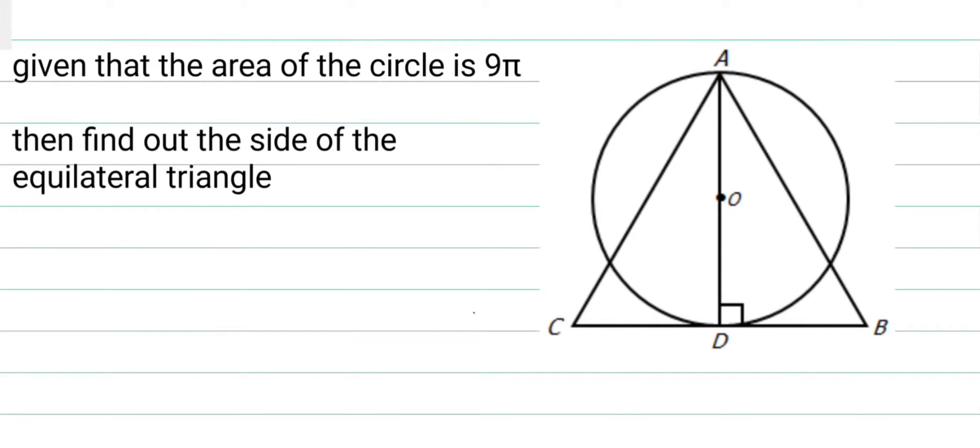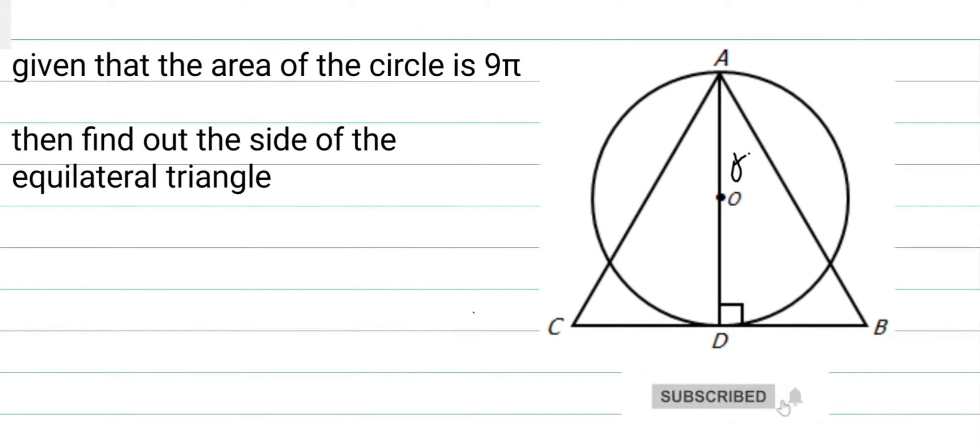Hello everyone, today we are going to solve this question. If the area of the circle is 9π, then what is the side of the equilateral triangle? So now, AO, that is also R.